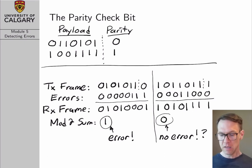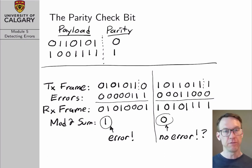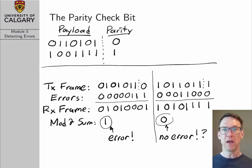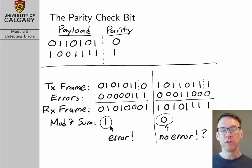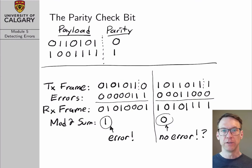There are errors that will slip through our scheme. In this case, we would take the received packet, assume it was okay, pass it up the protocol stack, somebody would try to play it on their video player, and they would get corrupted video. So our error detection scheme would have failed.